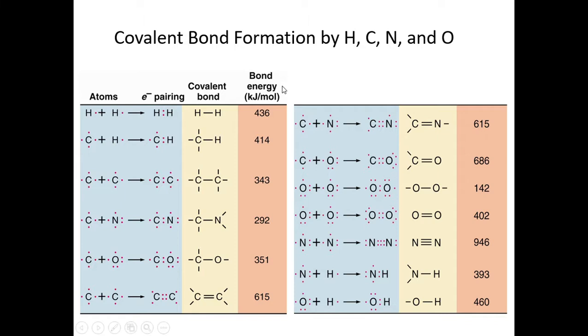And this is directly related to bond length. So if we look at the single carbon-carbon bond, bond energy here is 343 kilojoules per mole compared to the carbon-carbon double bond, which is 615 kilojoules per mole. This figure does not show a carbon-carbon triple bond, but we can look at a nitrogen triple bond here with a bond energy of 946 kilojoules per mole.